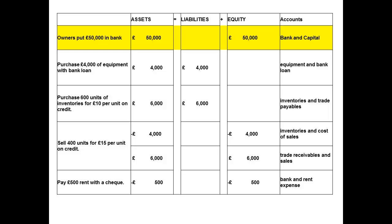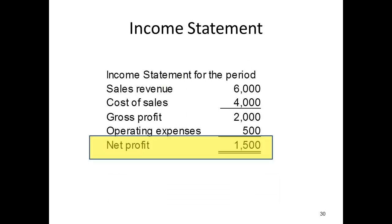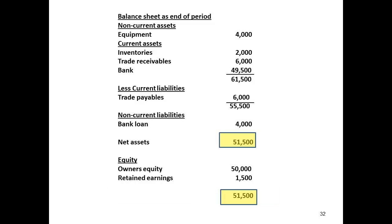We will now turn to equity. The very first transaction records the initial capital of £50,000, and we enter this figure as the owner's equity. Now I need to return to the income statement, where the figure of £1,500 was recorded as profit, and we need to transfer this into the balance sheet. The figure of £1,500 is entered to the balance sheet as retained earnings. Adding these, we have a figure of £51,500 for equity.